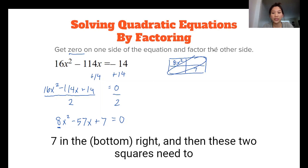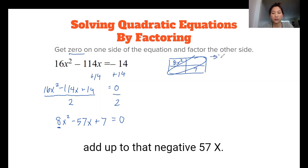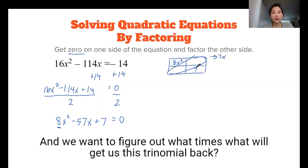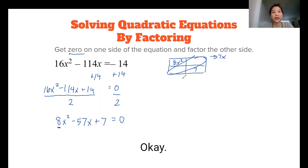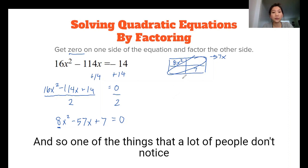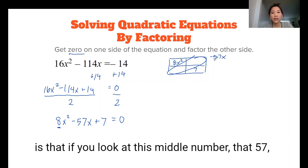And we want to figure out what times what will give us this trinomial back. Okay, and so one of the things that a lot of people don't notice is that if you look at this middle number, that 57, it's actually a pretty large number compared to the other coefficients, that 8 and that 7.